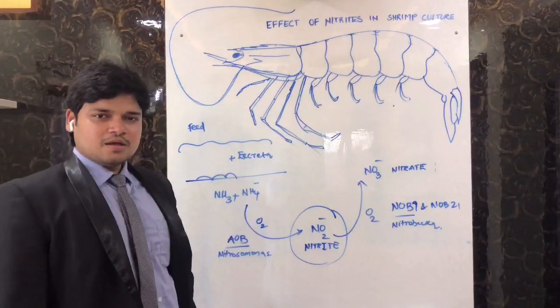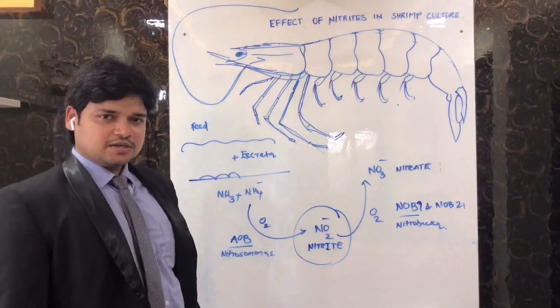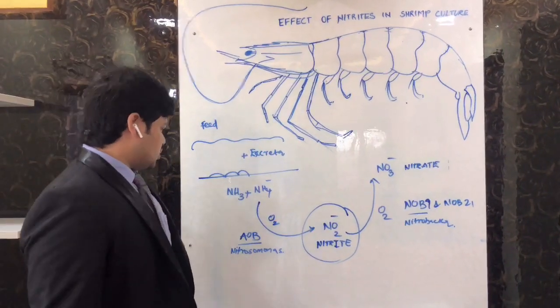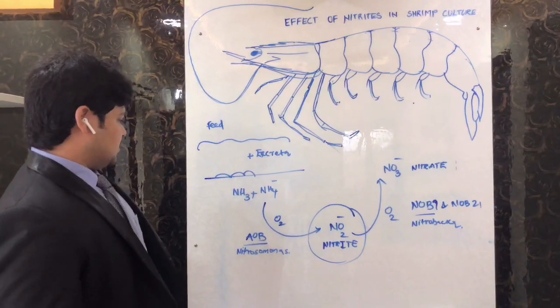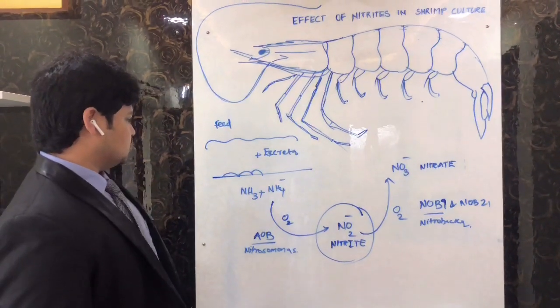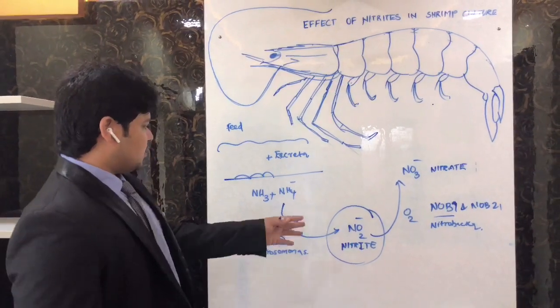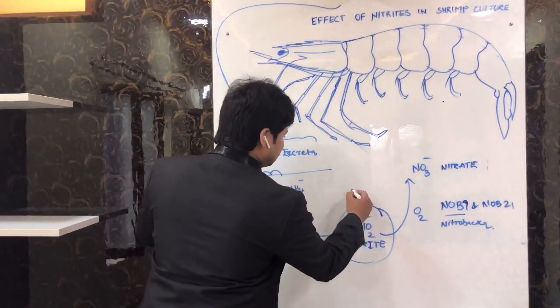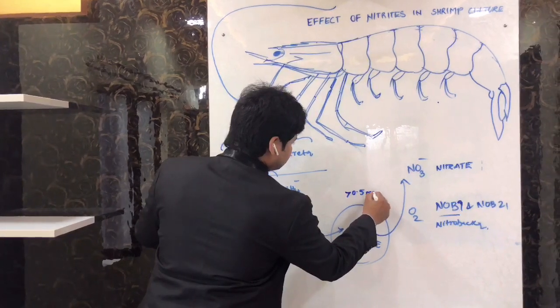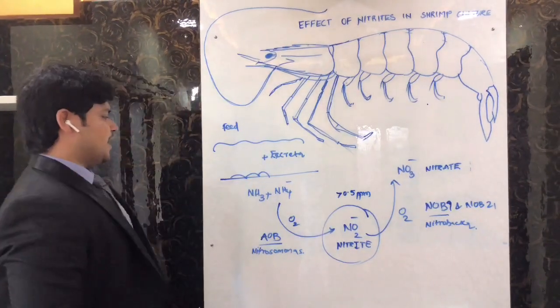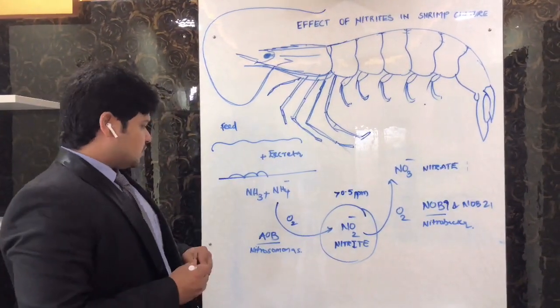In poorly oxygenated ponds, especially where the DO levels are below 1 or below 2, this nitrification process is very slow. Usually if the nitrite levels are greater than 0.5 ppm, it's going to be very toxic.